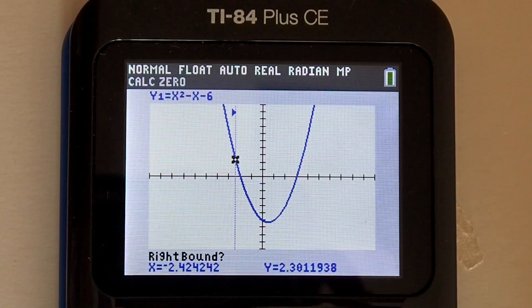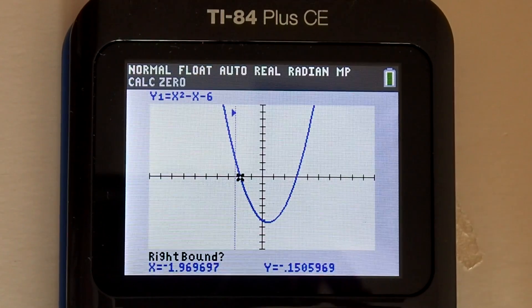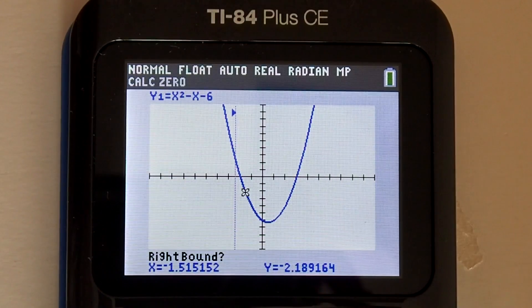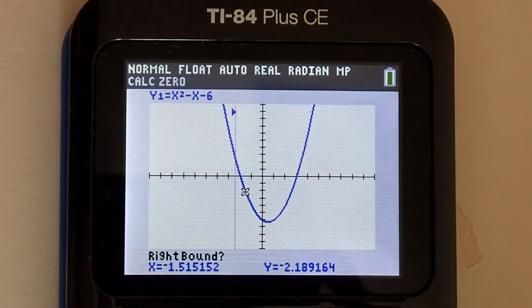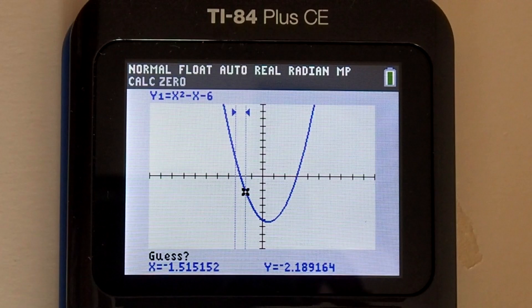Now the calculator is asking for a right bound. Move the cursor using the right arrow key to the right of x equals negative 2. Right there is good. Press the enter key. Now the calculator is asking for a guess of the value of x intercept within those bounds. Skip this step and just press the enter button.